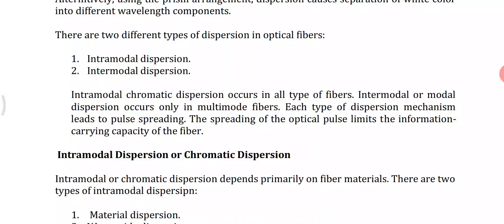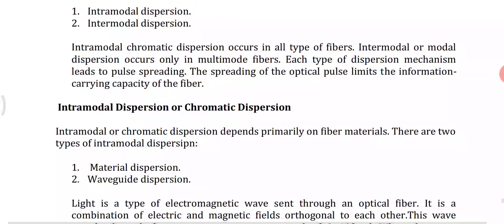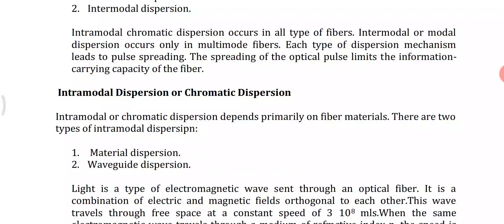Intramodal dispersion occurs in both single-mode and multimode fibers, whereas intermodal dispersion occurs only in multimode fibers. It arises due to group velocity being a function of wavelength. Increasing the spectral width of the optical source will increase the intramodal dispersion. The spreading of optical pulses limits the information-carrying capacity of the fiber.